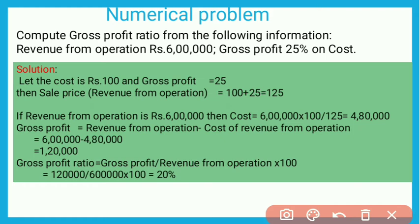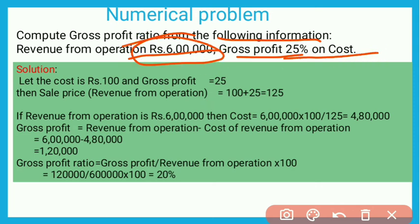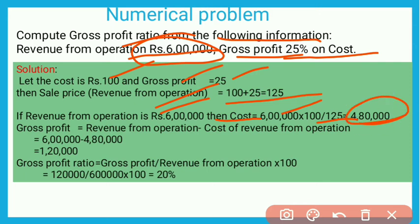Now let's look at a question. Compute gross profit ratio from the following information: Revenue from Operations = ₹6 lakh, Gross Profit = 25% on cost. Since gross profit is given on cost, we first find the cost. Let the cost be 100, so gross profit = 25, and selling price = 125. Then cost = 6 lakh × 100 ÷ 125 = ₹4,80,000.